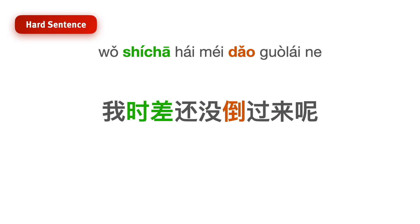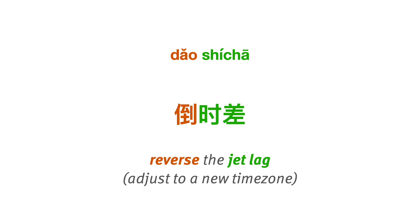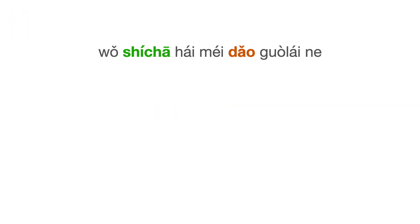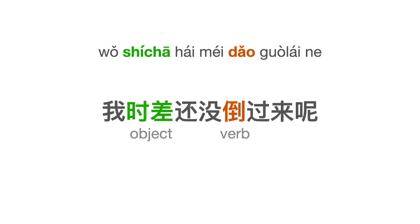Now let's go back to the original hard sentence: 我时差还没倒过来呢。 We know that 倒时差 is to reverse the jet lag. But in this sentence, it becomes 时差倒 — what's going on? Well here, 时差 is actually the object, and 倒 is the verb. So we're putting the object before the verb.